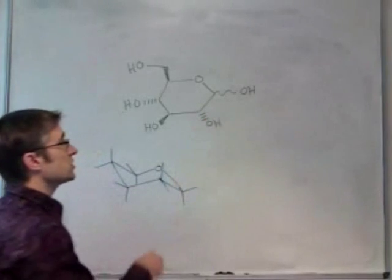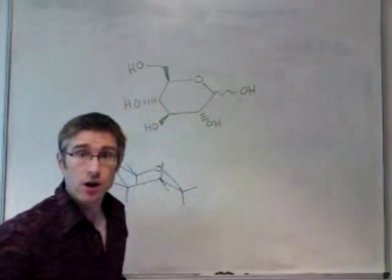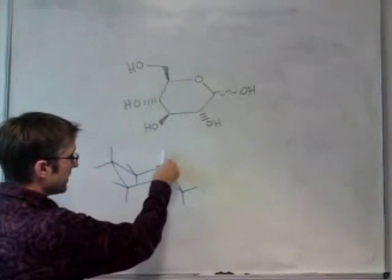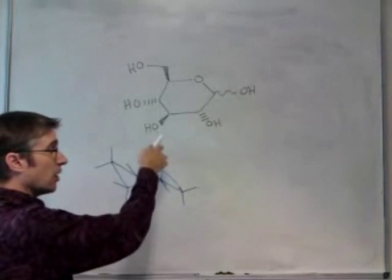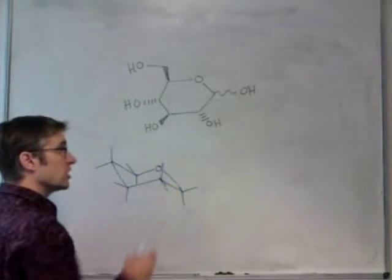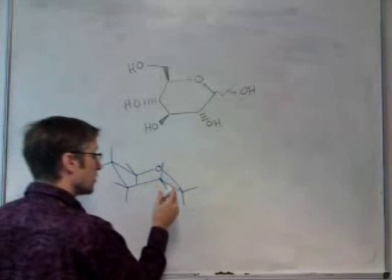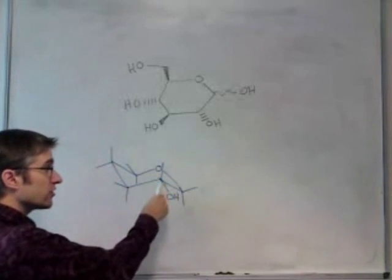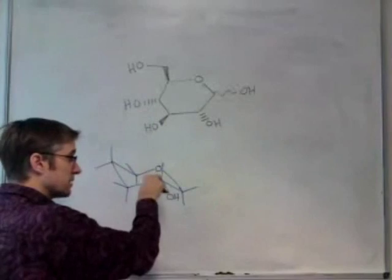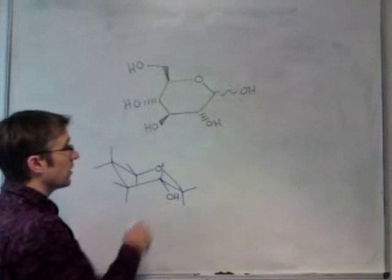We then come round to the next position. The OH is pointing down on this ring. Well, this OH is clearly pointing upwards. This OH is pointing downwards. So this must be where the OH is—it's pointing not upwards towards us, but down. So here is the OH group.